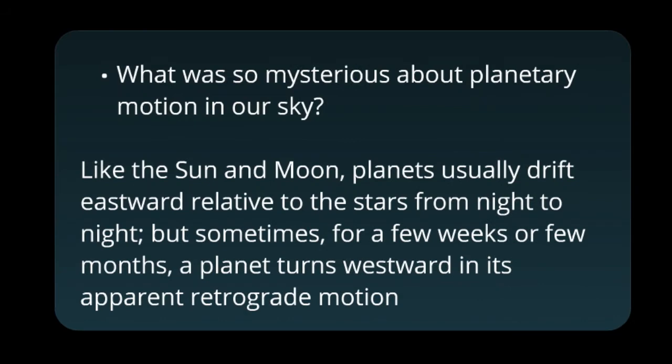Retrograde motion is when a planet moves from west to east in its orbit, which is apparently backwards with respect to its background stars, due to the fact that we're overtaking it in our orbit.